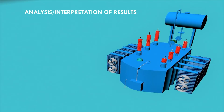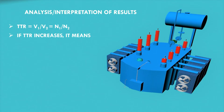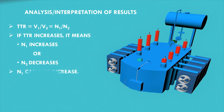For the analysis of results: TTR is the ratio of voltages on the primary and secondary side, or alternatively the ratio of turns N1 to N2. If TTR increases, it means either N1 increases or N2 decreases. N1 cannot increase on its own, so we consider the second possibility.